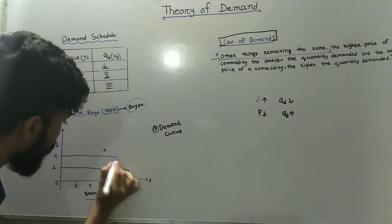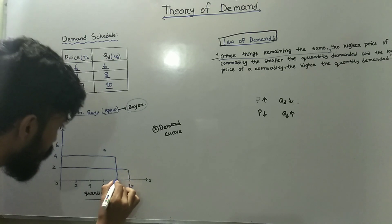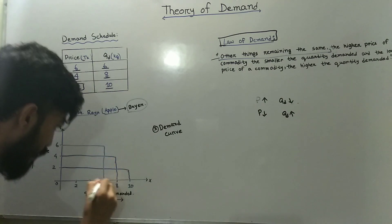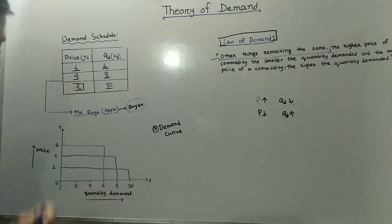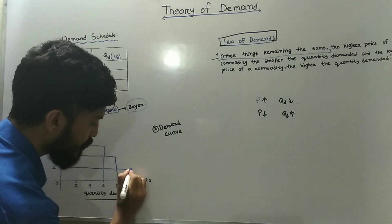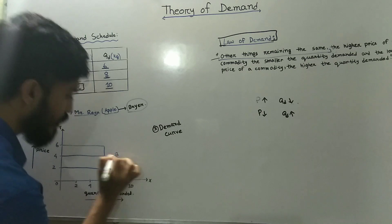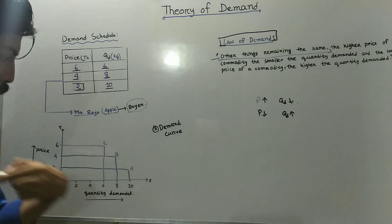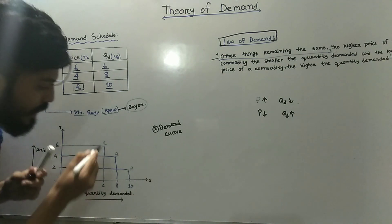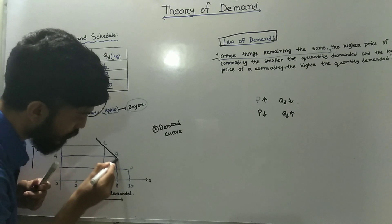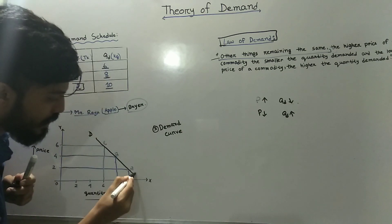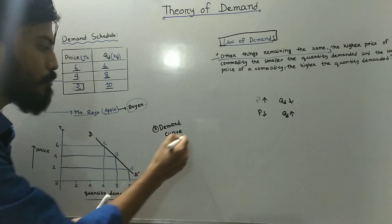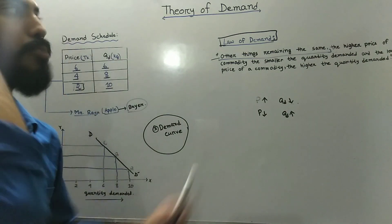So this is the same thing — we have to do this. Let's write the points: A, B, C. The demand curve is labeled D-D prime. This is the demand curve, and in this case we will explain the law of demand.